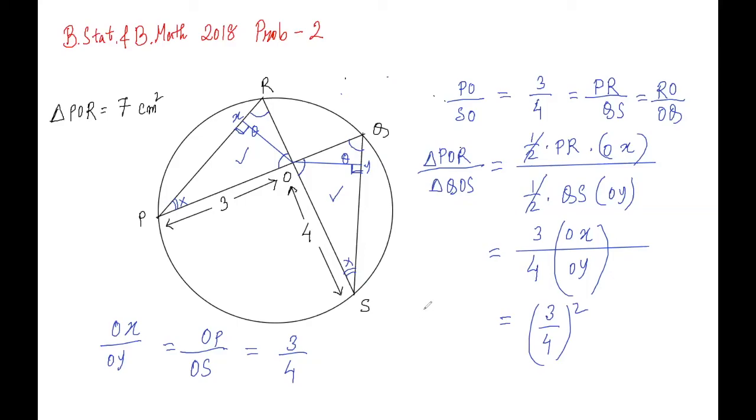Triangle POR by area of triangle QOS equals 9/16. We are given the area of triangle POR is 7, so the area of triangle QOS will be (16/9) × 7 cm². If you calculate it, it will be 112/9 cm², and that's the answer.